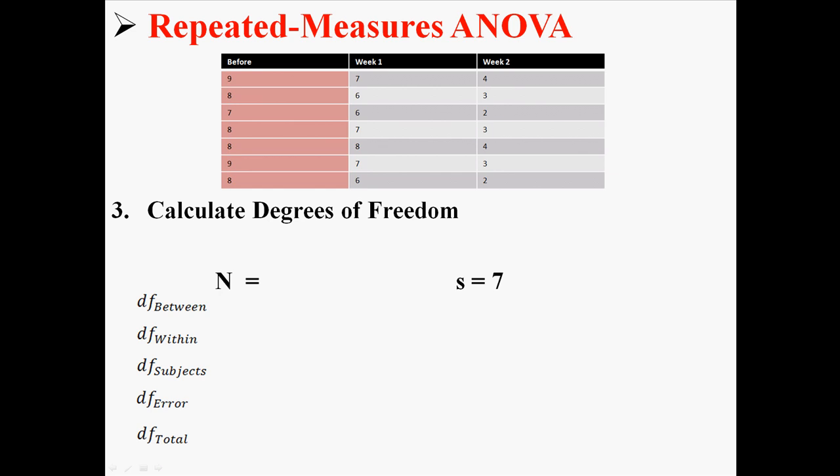S refers to the number of subjects within each level. So we have seven subjects in before, seven in week one, and seven in week two. So S is seven. N refers to the total number of measurements you've taken. We've measured these seven people three times. So we have 21 total measurements. Now we're going to use this information to calculate degrees of freedom.